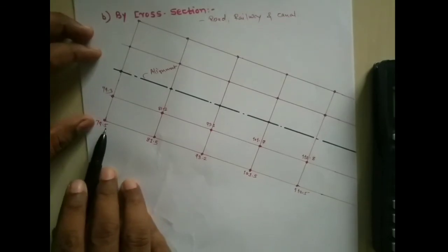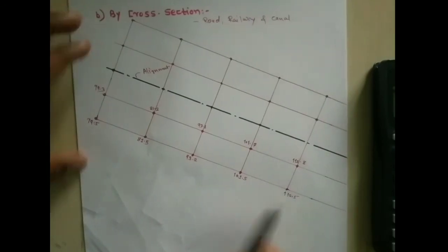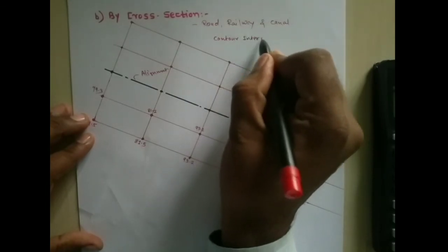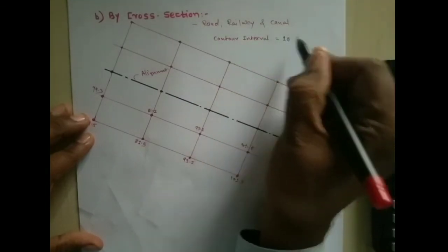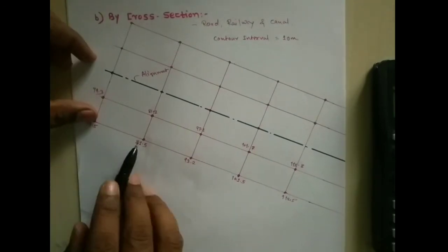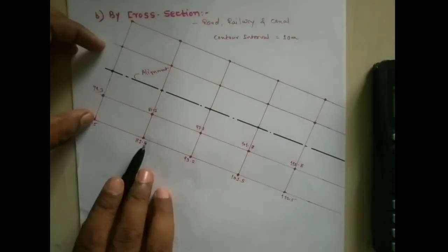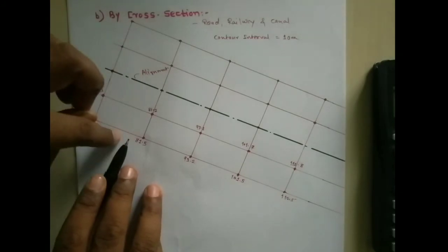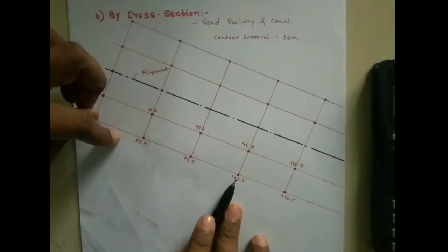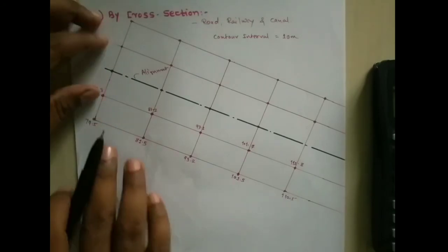Here we have values such as 79.5, 81.5, 93.2, 101.5, and 112.5. We can take one color as well. We can do 80 contour, 81 to 93, 93 to 101, 100 to 101, and 101 to 112. Here we can do 110. So how to plot this now?